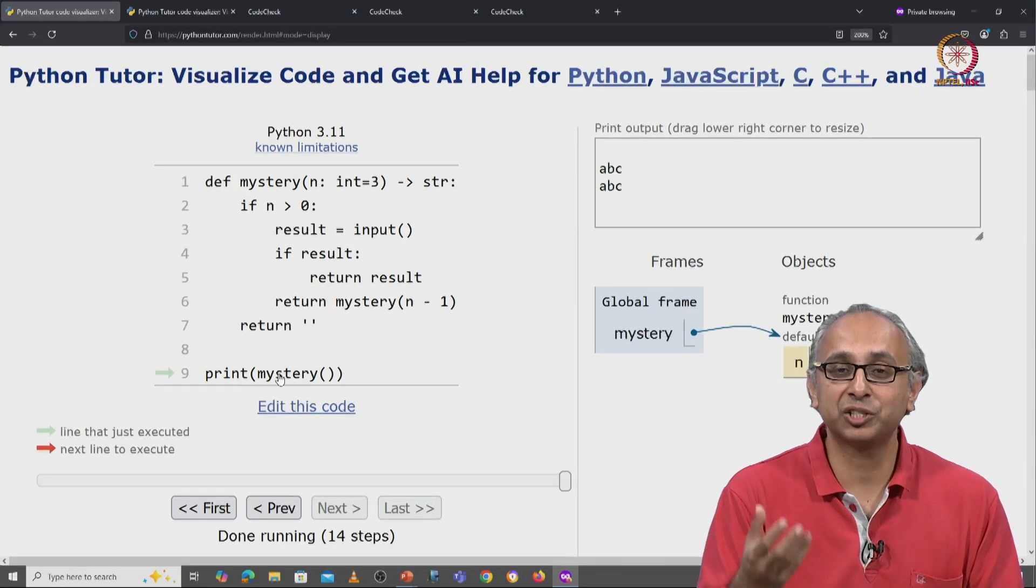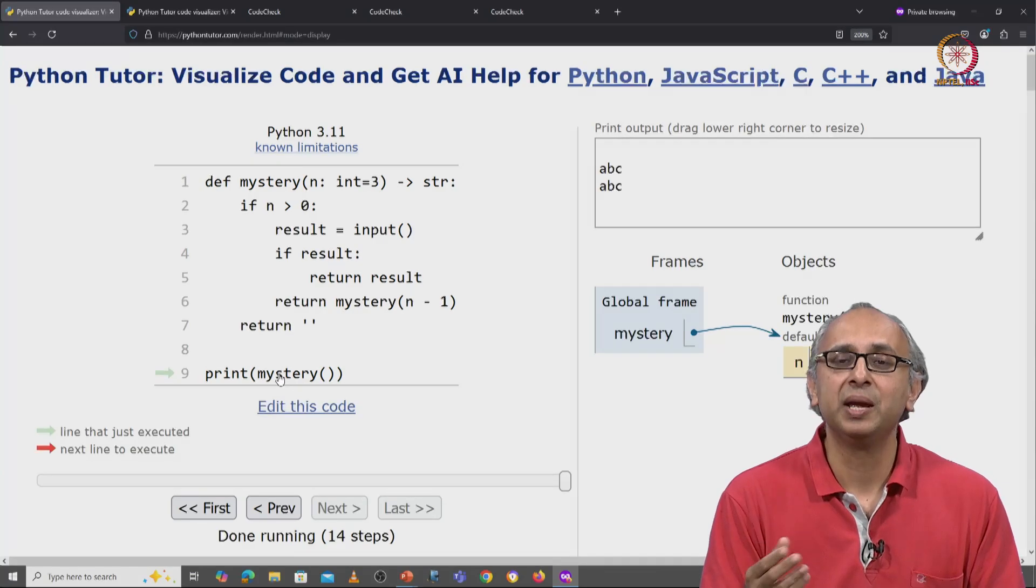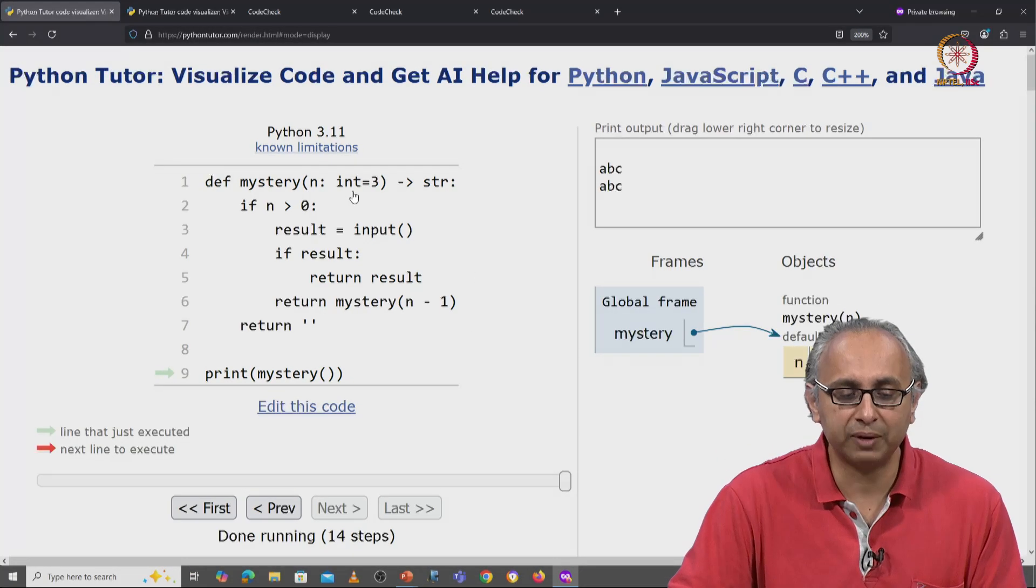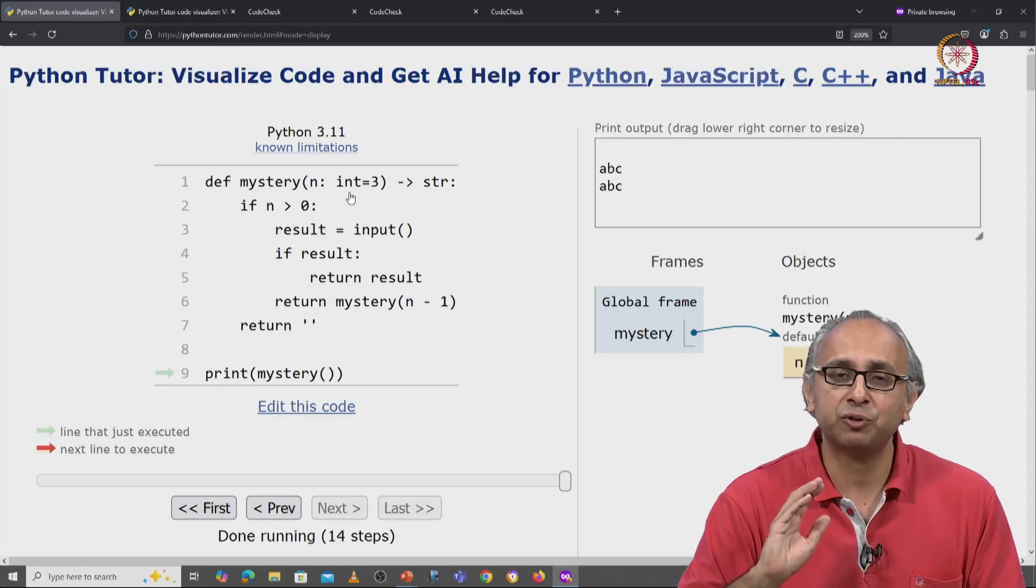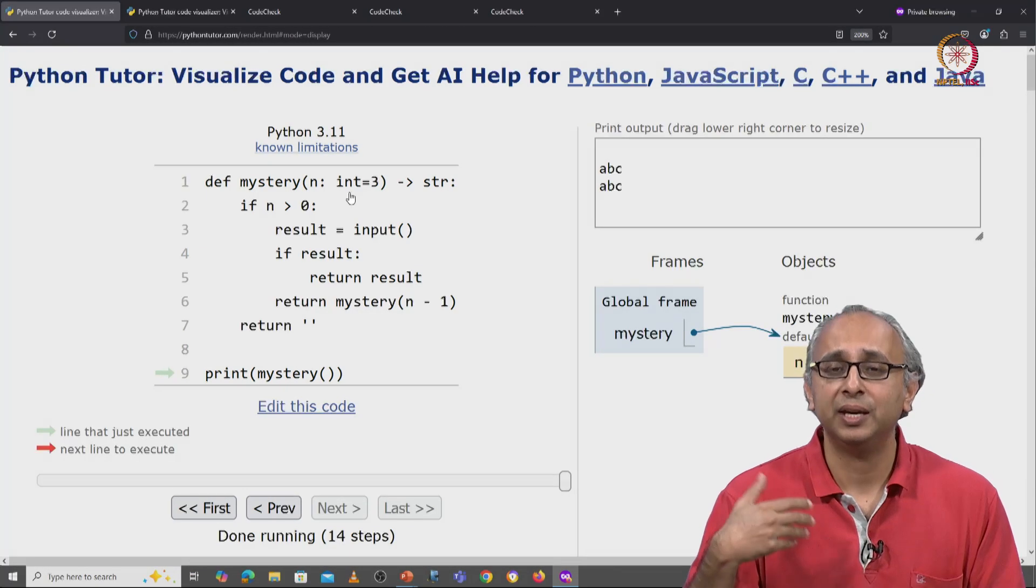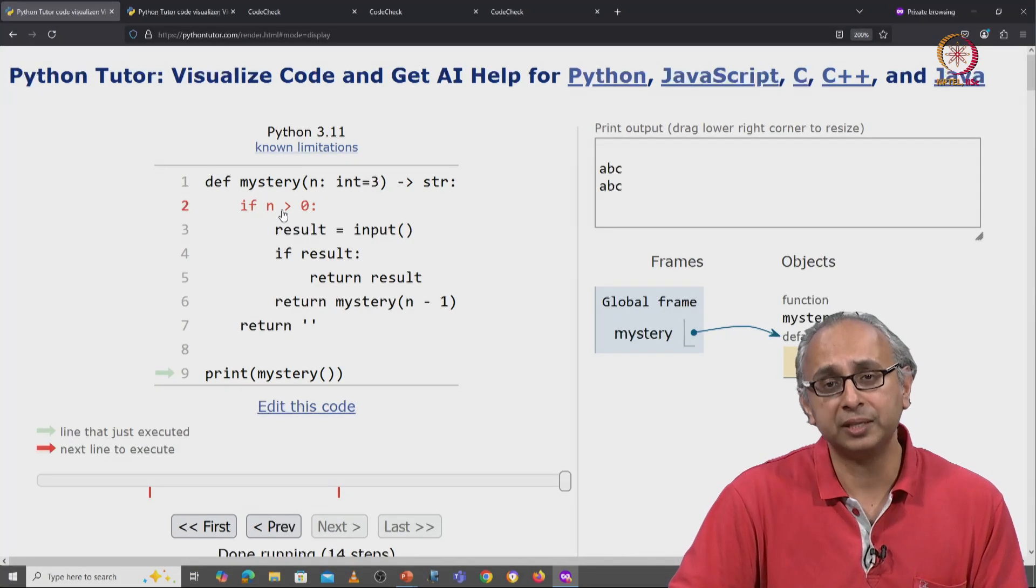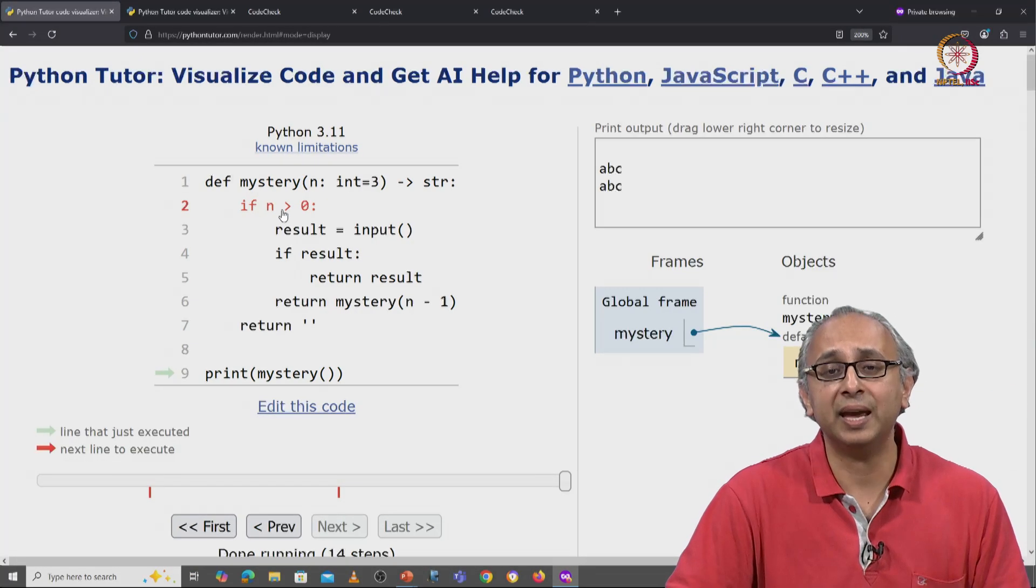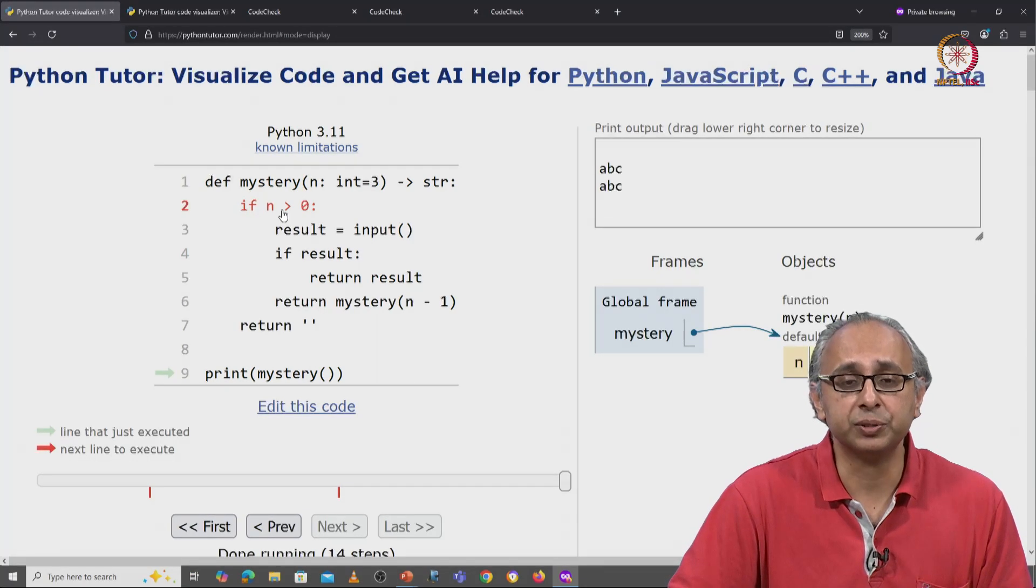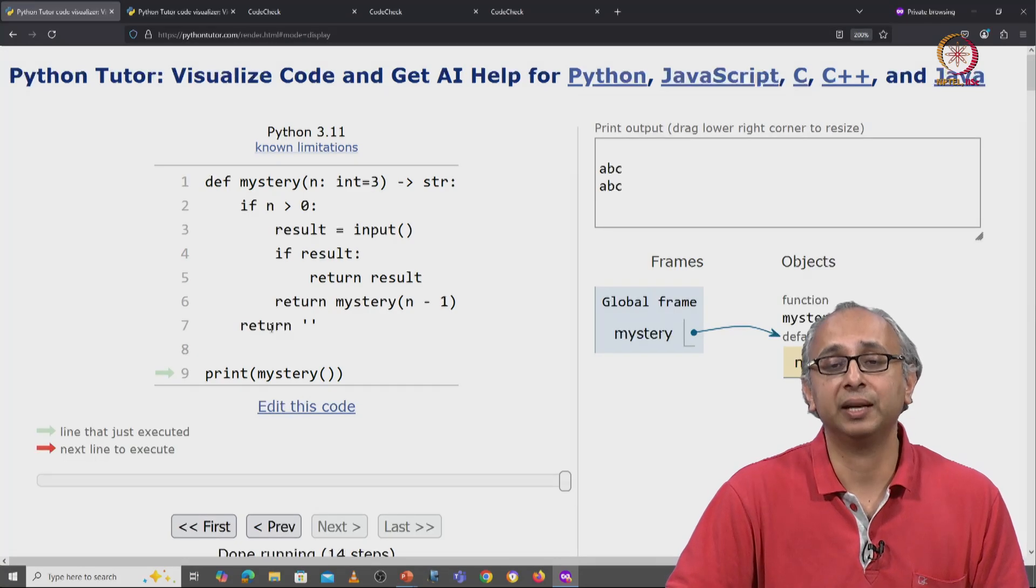It repeatedly asks me to enter a non-empty string, and at some point if I try 3 tries or whatever the original value of n is, if I try so many tries and every time I enter just the empty string, it gives up on me. So if n is no longer greater than 0, if this counter n counts down all the way down to 0, then I won't go into the if condition and I will simply return the empty string on line 7.